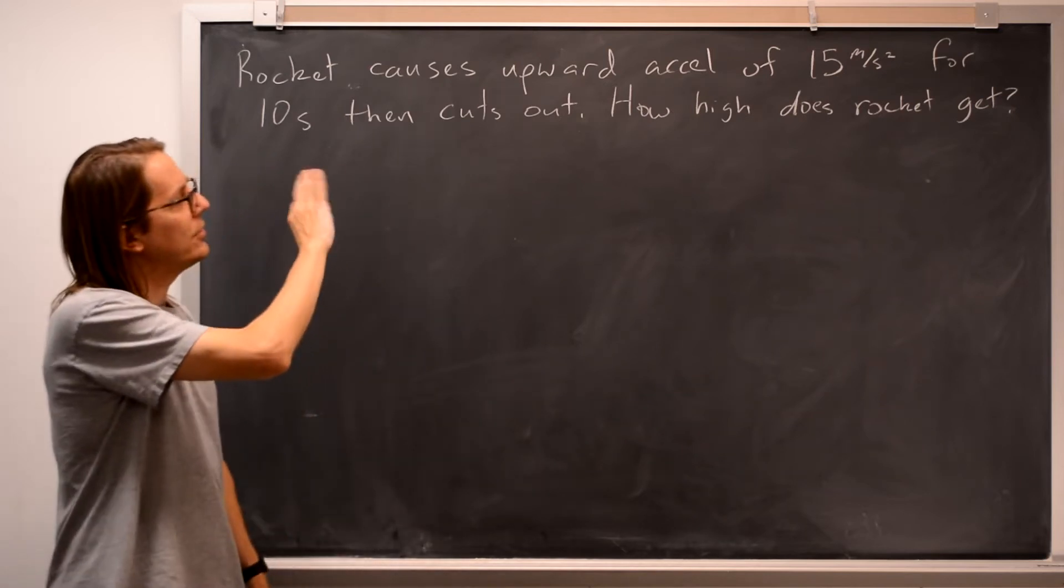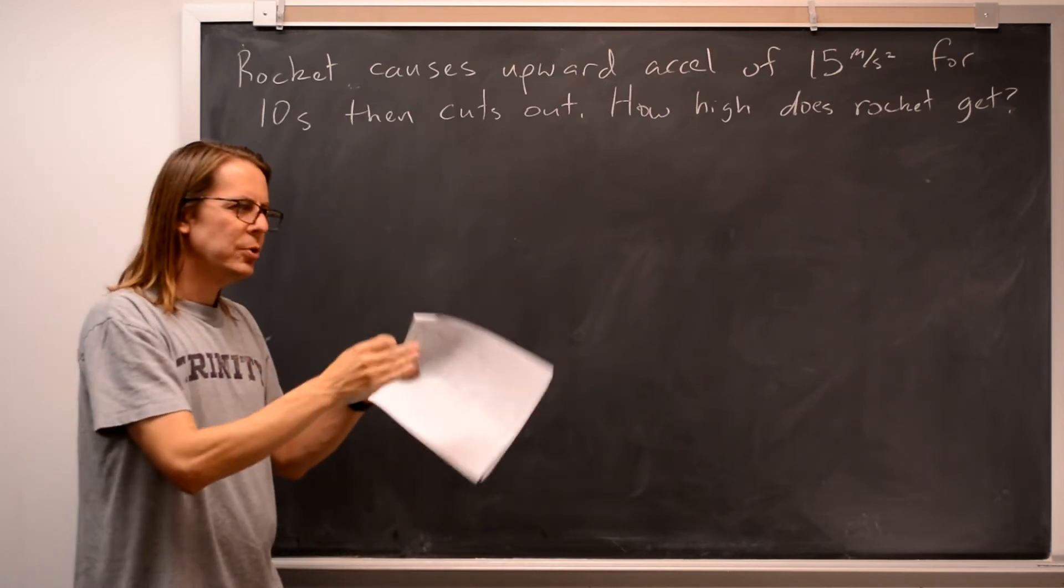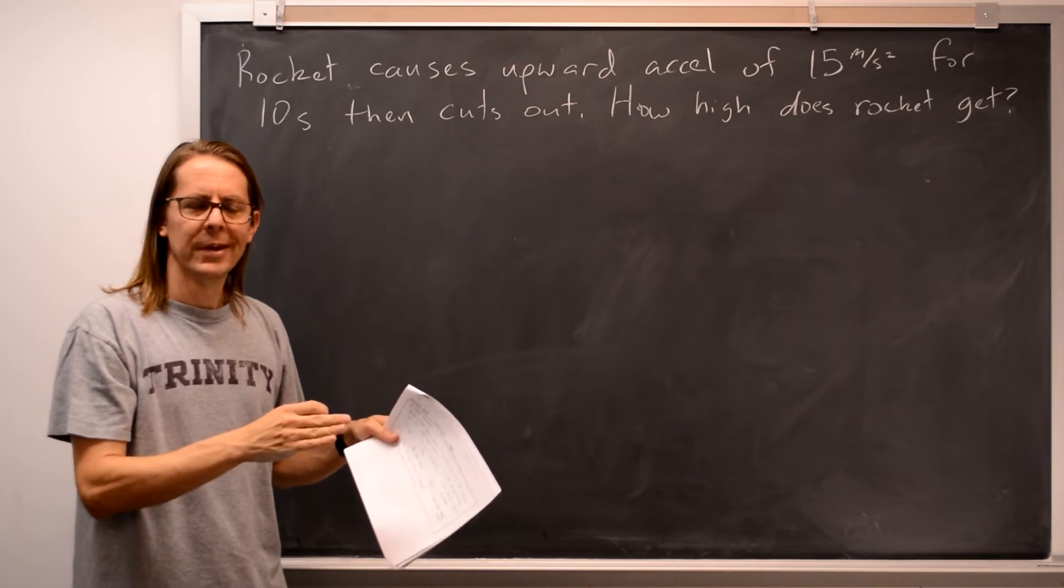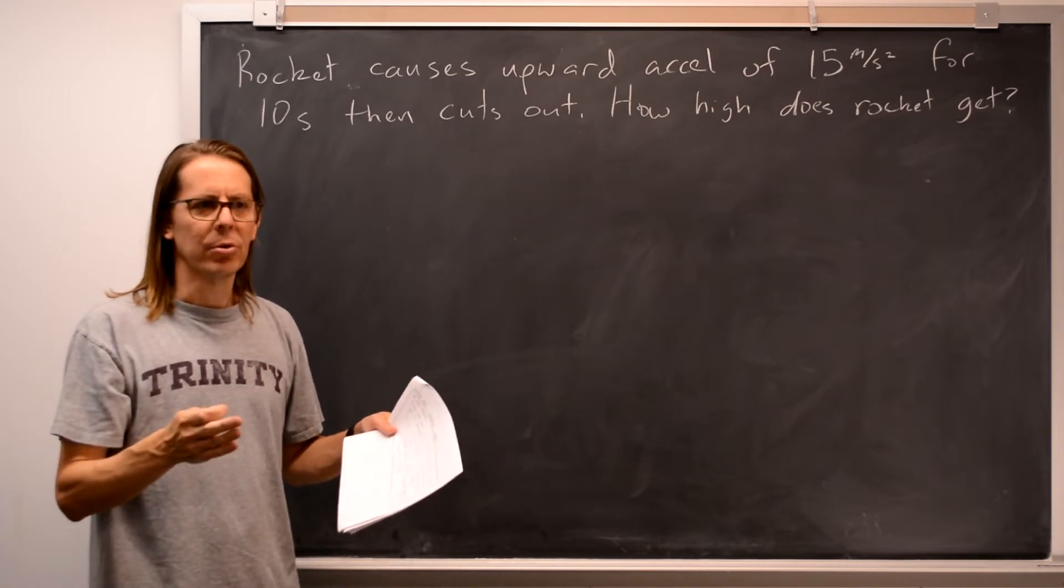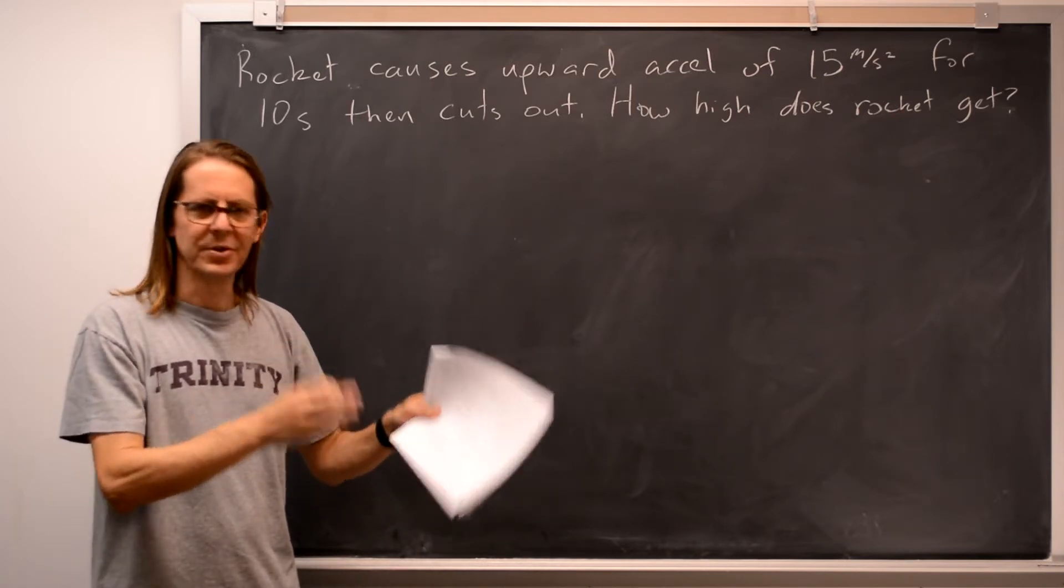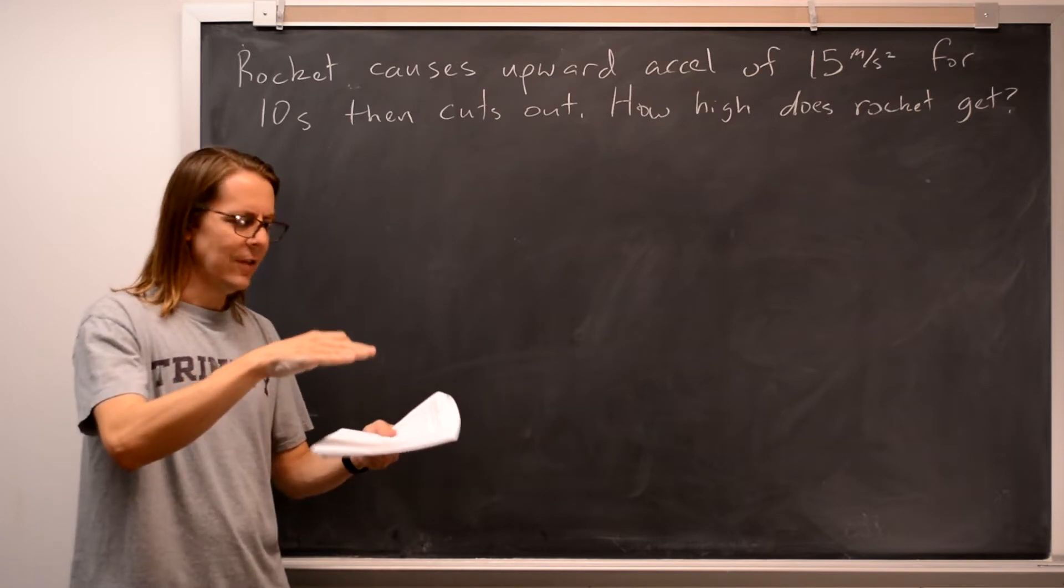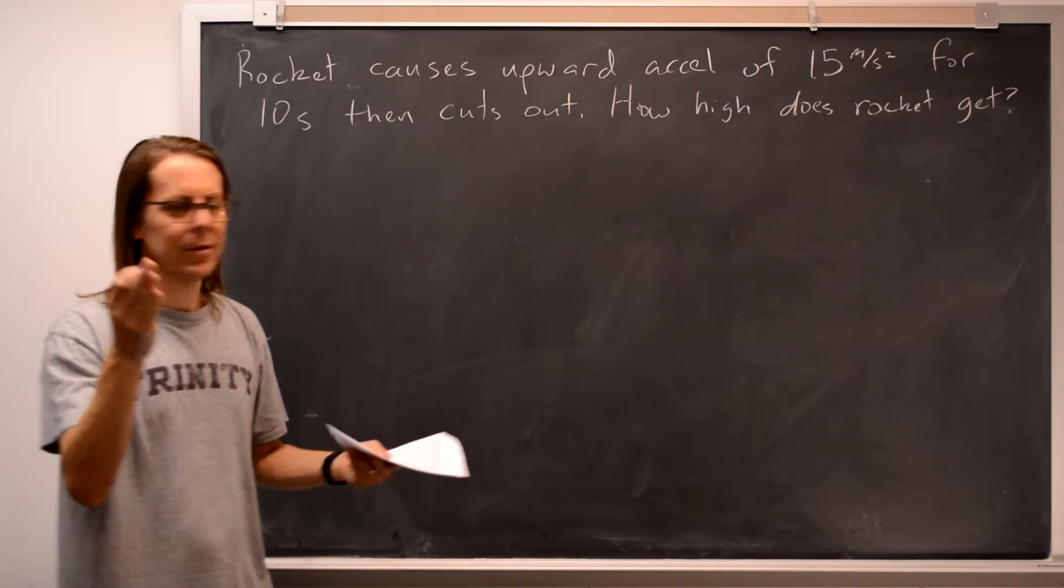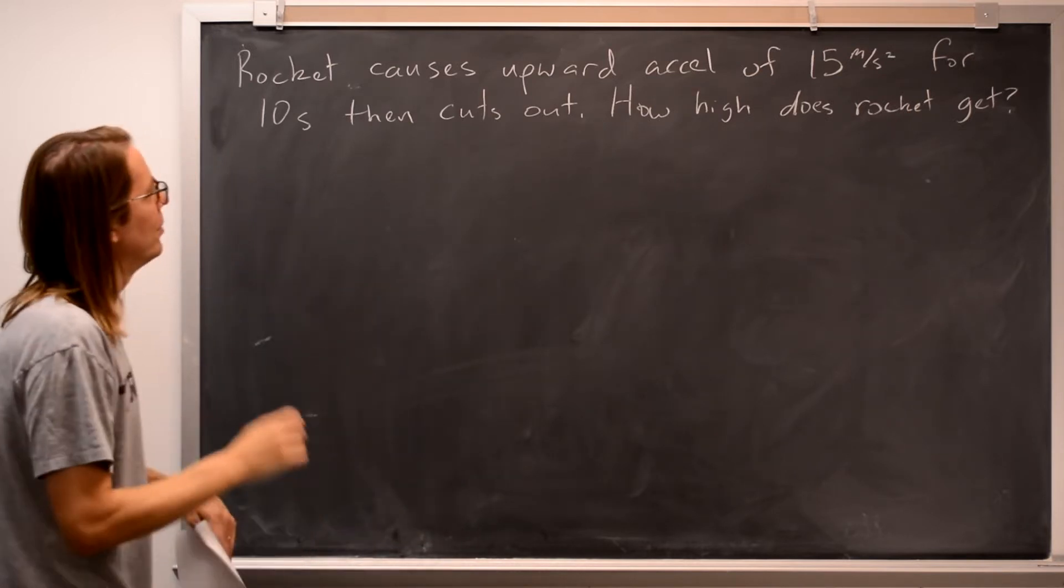This problem about a rocket illustrates cases where you have two separate phases of the motion that have different accelerations, so you really can't use one set of equations to solve it. You have to solve one phase, and then you solve the second phase. So this is sort of a multiple-segment problem.